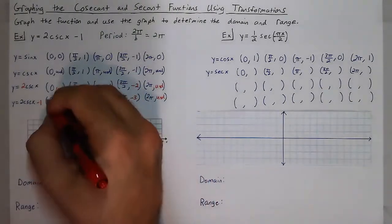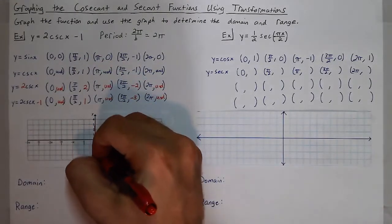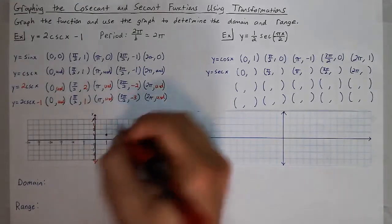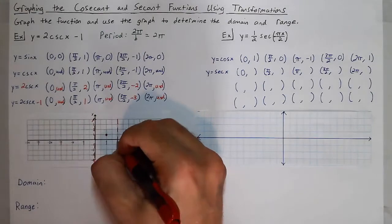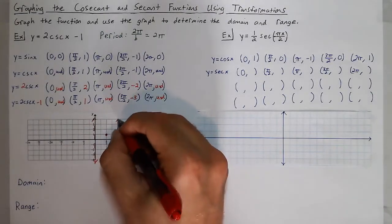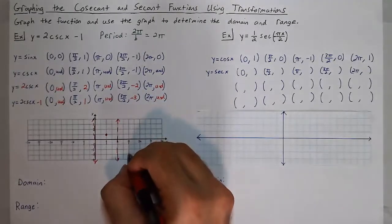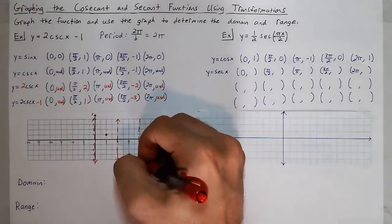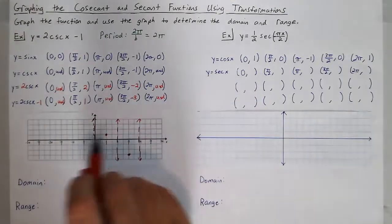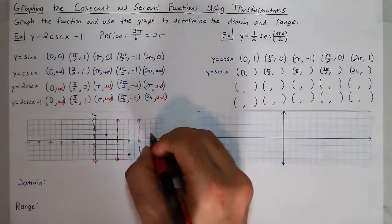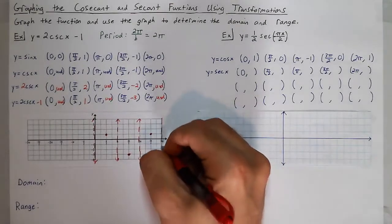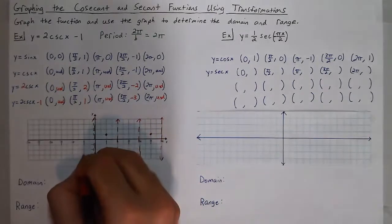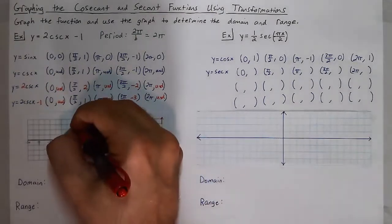Now we'll graph these points. At 0, undefined means an asymptote at 0. At π/2 we have a value of 1. At π it is undefined, so we put another asymptote. At 3π/2 it is negative 3. Then undefined at 2π. We can continue this pattern: asymptote, then 1, then another asymptote. Going backwards we have our asymptote, then 1, so the next one will be at negative 3.